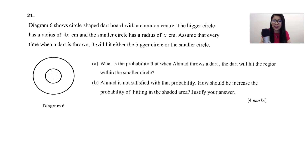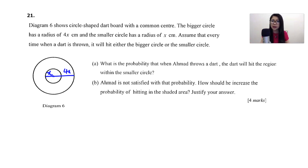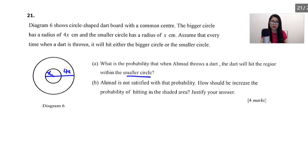Let's look at question number 21. This chapter is under circular measure. Diagram 6 shows a circle-shaped dartboard with a common center. The bigger circle has a radius of 4x cm, and the smaller circle has a radius of x cm. Every time the dart is thrown, it will hit either the bigger circle or the smaller circle. Part A: what is the probability that when Ahmad throws a dart, the dart will hit the region within the smaller circle?